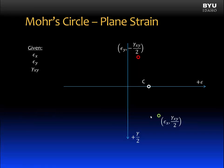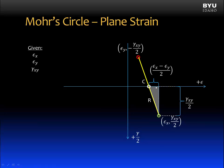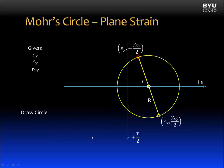Those two points are opposite points on Mohr's circle, exactly 180 degrees apart. We can find the radius of Mohr's circle by taking the distance from the center to either of the two points. We'll use a right triangle to find the length of the radius. The long dimension is gamma xy divided by two, and the short dimension is half the distance between epsilon x and epsilon y. The radius can then be computed from these.